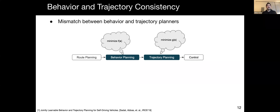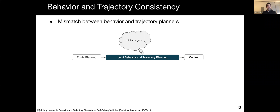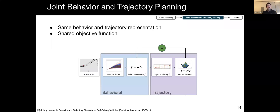Looking back at the behavior and trajectory planning steps, we can see that it is possible that the decisions between the two components are not consistent. This is likely due to the fact that at each step different objective functions are being optimized. Such inconsistencies can be avoided by performing joint behavior and trajectory planning. By using the same representation of behavior and trajectory, we can use the exact same objective function in both steps, reducing the chance of decision mismatch.